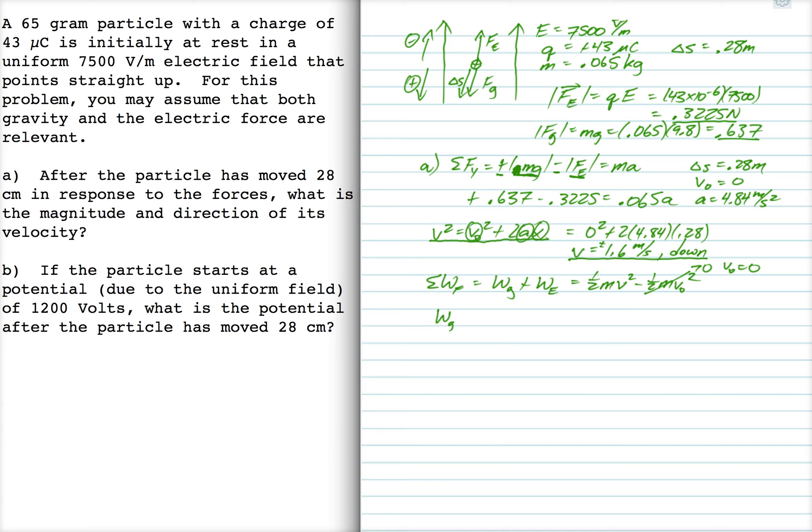The work done by gravity, I get to use the force times the distance times cosine theta in this case because it's a uniform field, a constant force. And so this is, and of course cosine 180, if you look up here, the angle between the gravity,